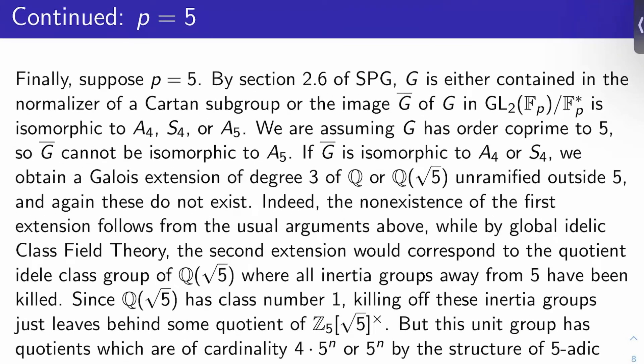P equals 5 is the tricky part. Let's suppose P is 5. By section 2.6 of Serre's paper, G, the image of rho P bar, is either contained in the normalizer of a Cartan subgroup, or the image G bar of G in GL2 of F key mod Fp star is isomorphic to A bar, A4, S4, or A5.